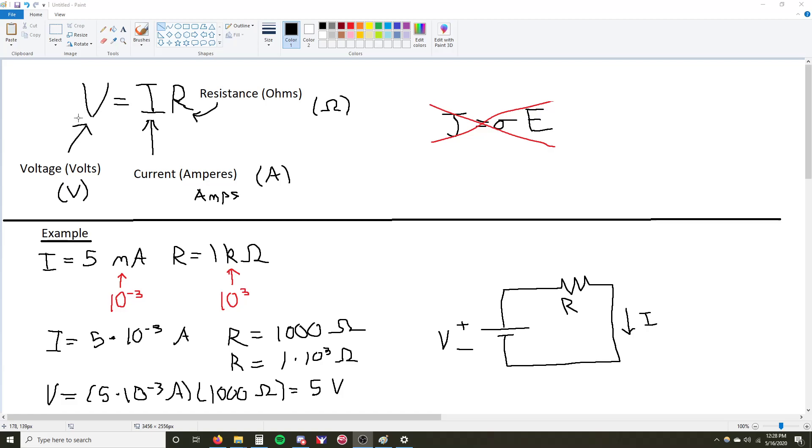For Ohm's Law, it's very simple. V equals IR. What does this mean? It means that voltage is equal to current times resistance.